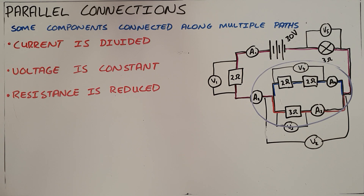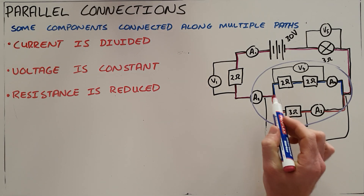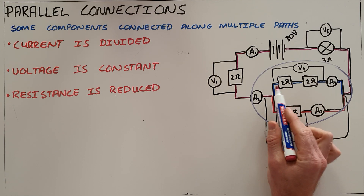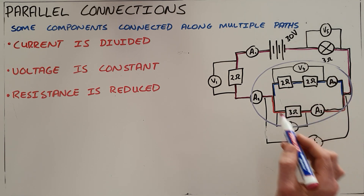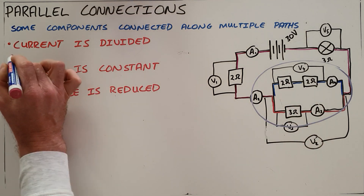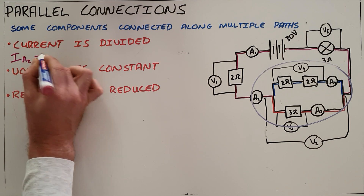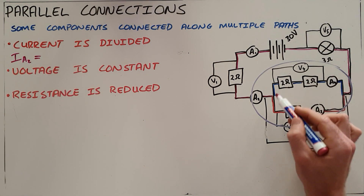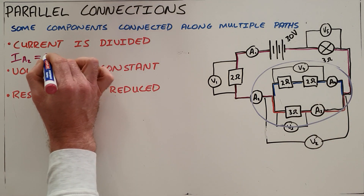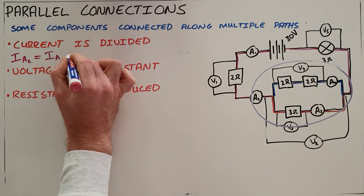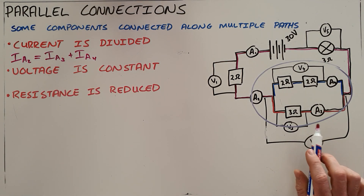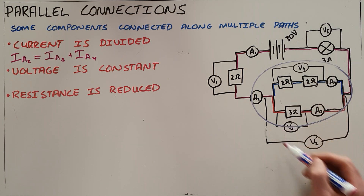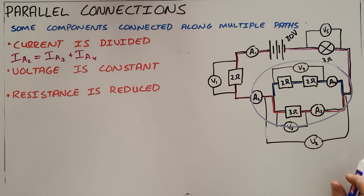As with series circuits, there are three rules that apply in parallel connections. The first rule is that the current is divided. Since the current splits, it cannot go in equal amounts along two different paths — it must be divided between those paths. The total current measured at ammeter A2 before the split must equal the sum of the currents on all paths, in this case the current through ammeter A3 plus the current through ammeter A4. If there were more arms, the current would be split between more routes.